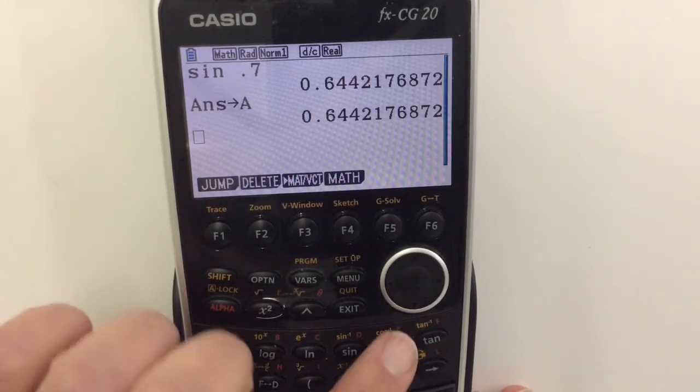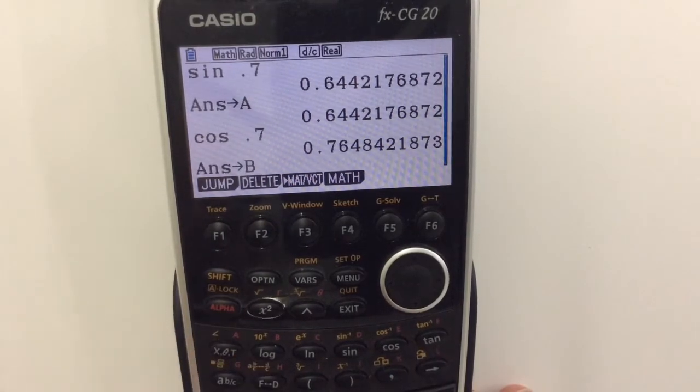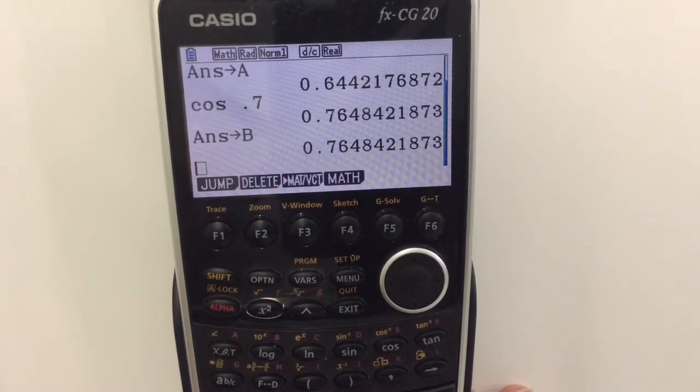We can do some other calculations. Maybe we want to do the cos of 0.7. Great! And let's store that one into B. Okay, so we've done something else. We can of course go back to A if we want to.